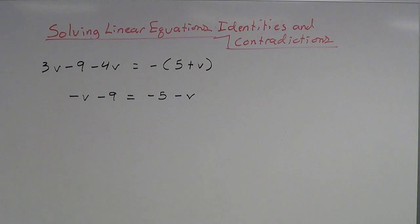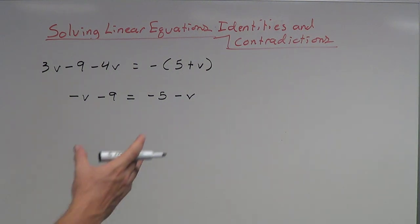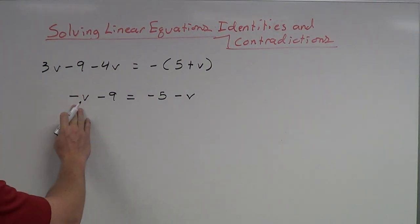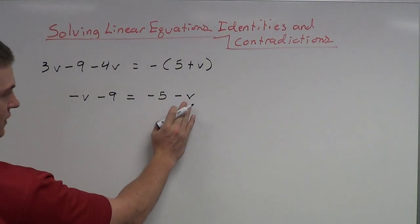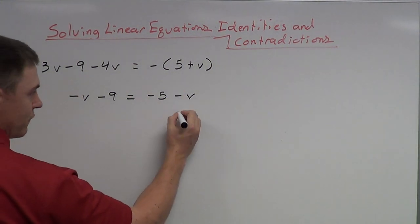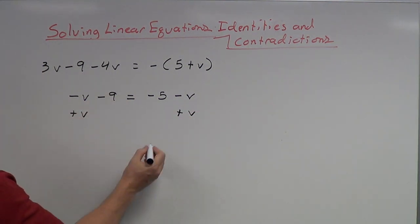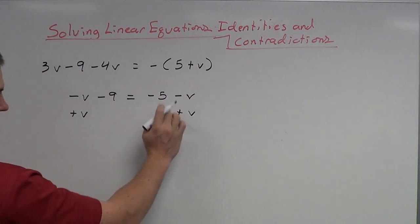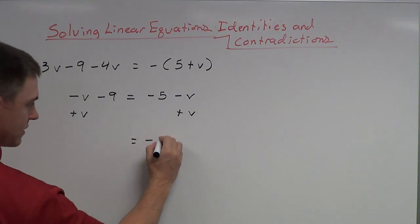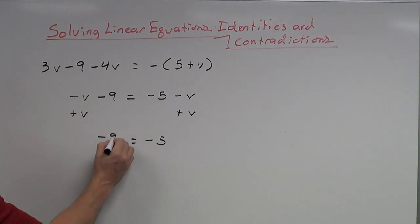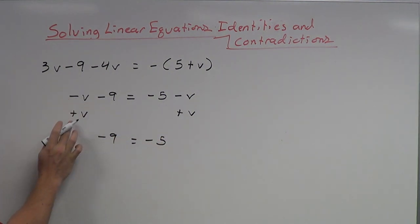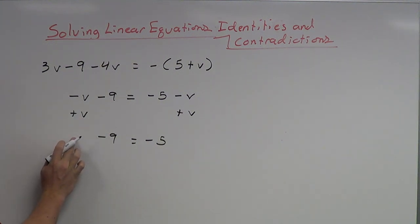Just like normal, I'm going to decide: do I want my variables on the left or on the right? Let's choose left. So I want to move all my variables to the left side. At negative v, I've got to add v to both sides. That makes 0 on the right variable side, so this equals negative 5. But then negative v plus v gives me 0, so that actually goes away.